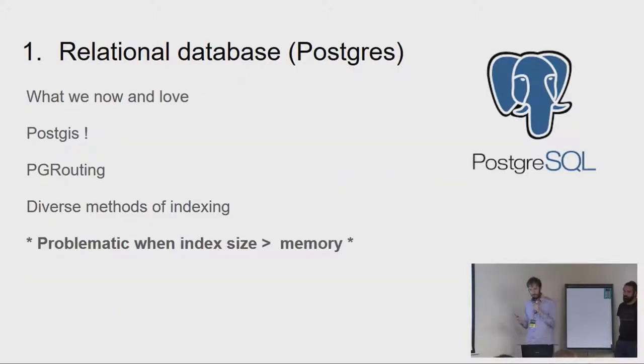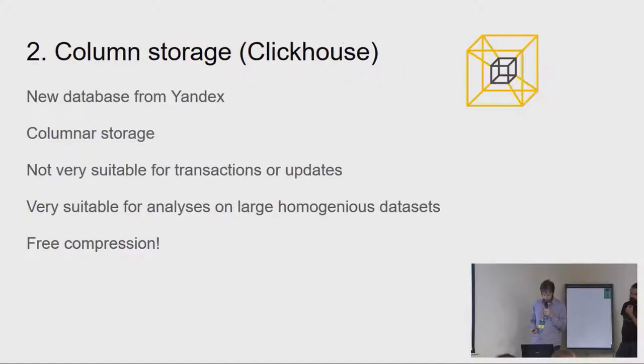The first thought is you put everything in a normal relational GIS-enabled database, which is obviously in this case Postgres with PostGIS on it. That was our first thought, because it has PostGIS, which we all know and love. It has PG routing on it, which you get routing kind of for free in it. And it has an enormous amount of indexing options on it, which is interesting, because it's time series data, which needs different kind of indexing than normal. Only thing is, it gets a little bit problematic, this kind of database, if it doesn't fit into memory anymore, these indexes. And they don't after some time.